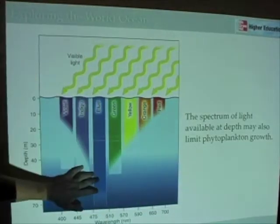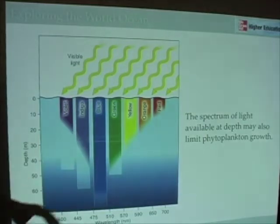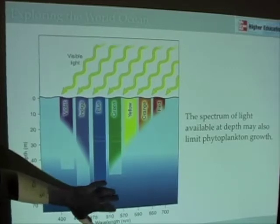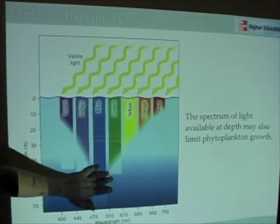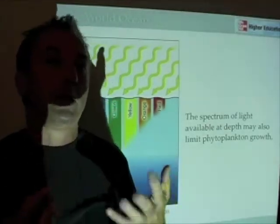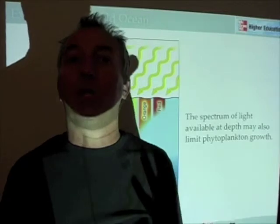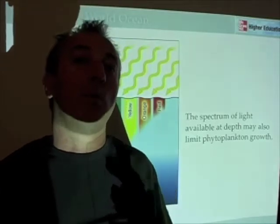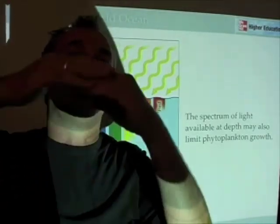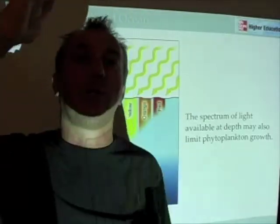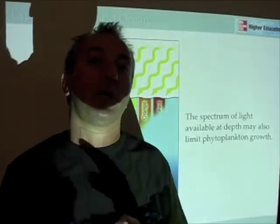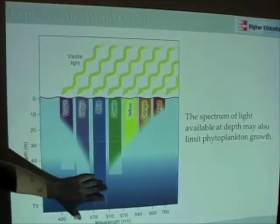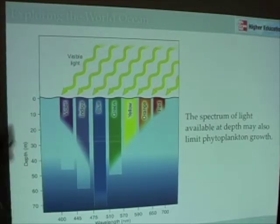Light intensity — just like you have sun plants and shade plants — and light color, where you have different wavelengths of light penetrating and being more or less available: those two quantities, light intensity and light spectrum, can change the ecology of phytoplankton. Certain species are low-light adapted; certain species may be more green-adapted or more blue-adapted. So it provides a variety of different niches along which evolution can occur to tune different species for different habitats in terms of a physical property like light.